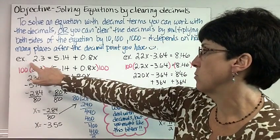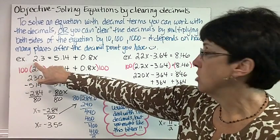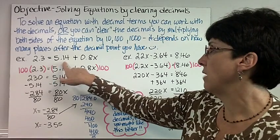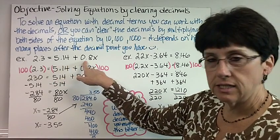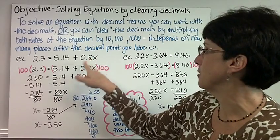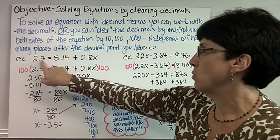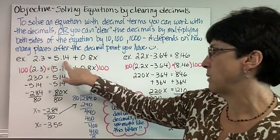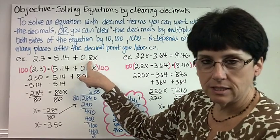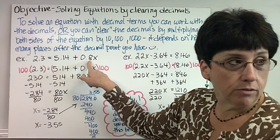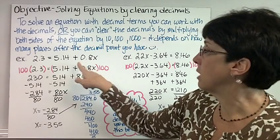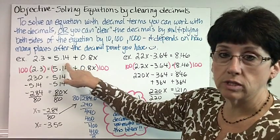So let's say I have this problem. Example: 2.3 equals 5.14 plus 0.8x. So you look at this and you say one place past the decimal point, two places past the decimal point, one place past the decimal point. What's the most that I would have to do to clear this? I'd have to multiply by 100, because there's hundredths here.